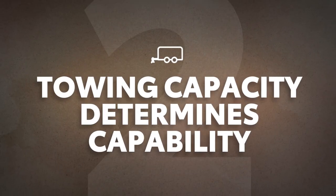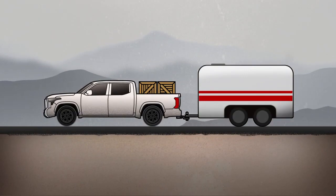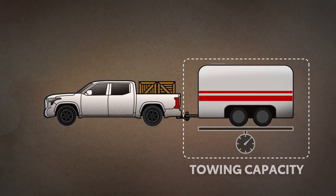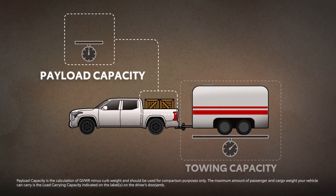There are several ratings related to a vehicle's ability to tow, but towing capacity is arguably the most crucial. That's because this figure represents the maximum amount of weight a vehicle can tow when pulling a trailer. This shouldn't be confused with payload, which is how much weight the vehicle can carry on its own.